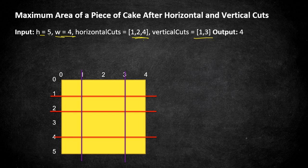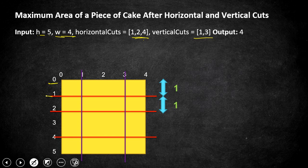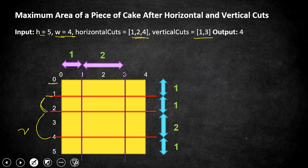The area of a rectangle is height times width. To find the individual height and width of each piece, consider this as rows and columns. For the first row, the height is 1 (difference between 0 and 1), the next row is also 1 (difference between 2 and 1), the next is 2 (difference between 4 and 2), and the last one is 1. Similarly, the column widths are 1, 2, and 1.